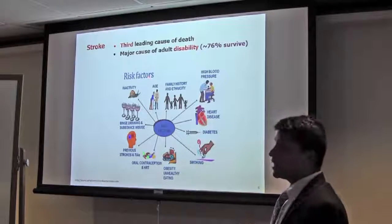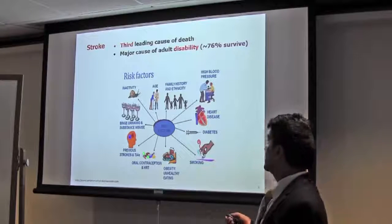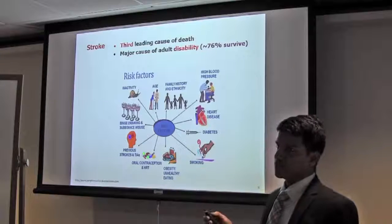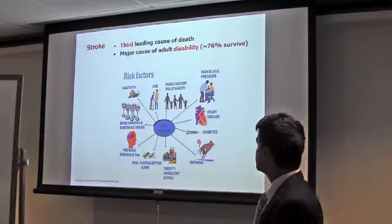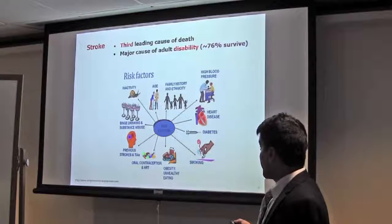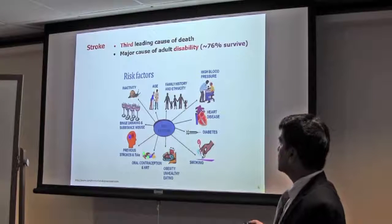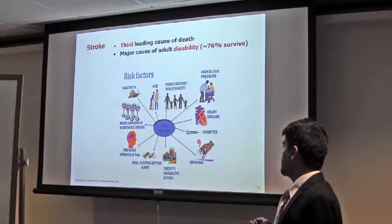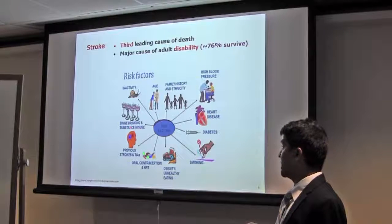Stroke is the third leading cause of death worldwide, and the major cause of adult disability, because around 76% stroke patients survive. Risk factors for stroke include inactivity, age, family history, hypertension, heart disease, diabetes, smoking, and drinking.